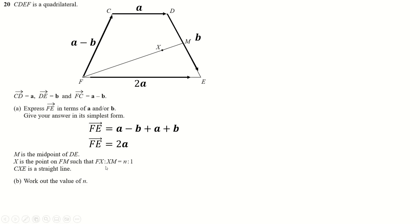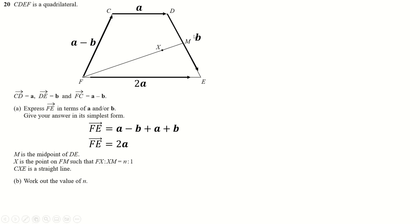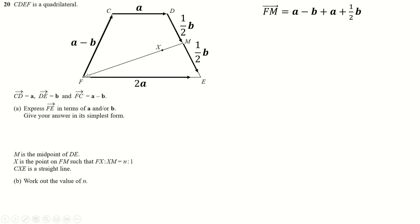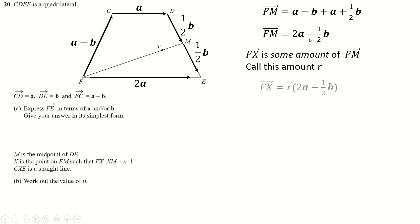Now it's talking about some ratio from F to X to X to M. I'm going to ignore the ratio for now and find F to M first. M is the midpoint, so I split the B into half B and half B. F to M is A minus B plus half B, which gives A minus half B. And F to X is just some amount R of that whole vector — it's some fraction of the line F to M.